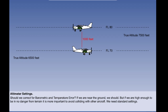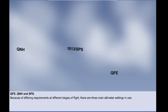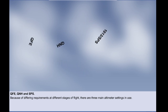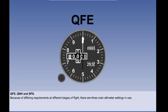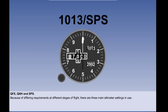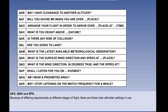Their true altitude doesn't matter, as long as there is no danger of either of them hitting the ground. Because of differing requirements at different stages of flight, there are three main altimeter settings in use. These are called QFE, QNH, and standard pressure setting, or sometimes simply 1013. These three-letter groups starting with Q come from a code used for Morse messages. Now that voice messages have replaced Morse in aviation, hardly any Q codes remain in common use, but some are still employed for pressure settings, radio bearings, and runway direction.